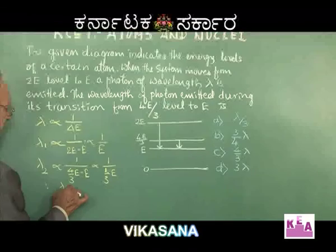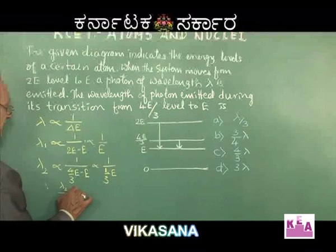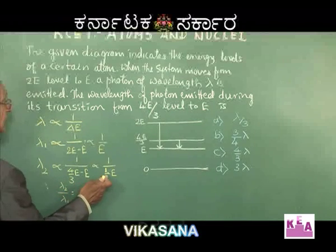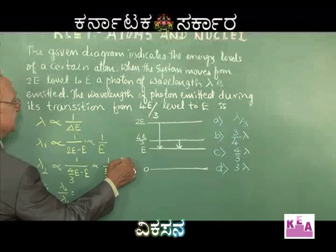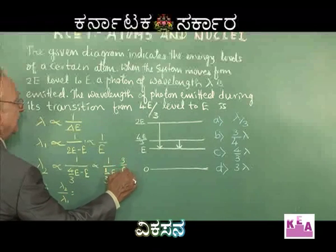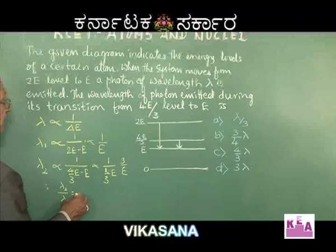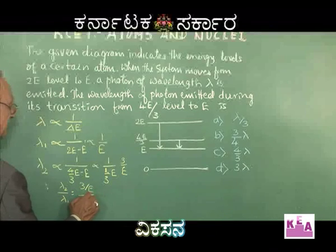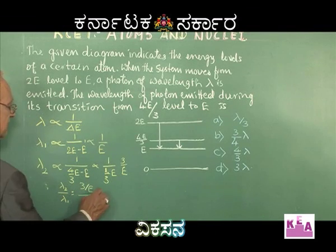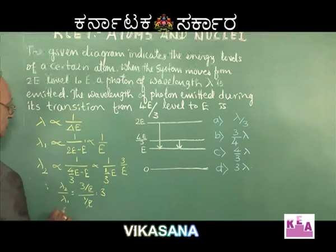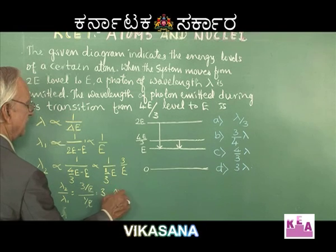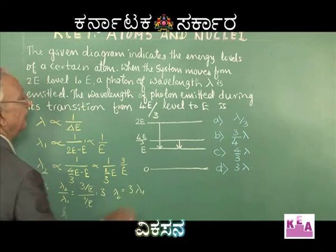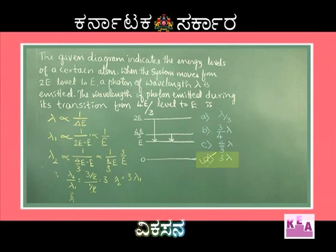Taking the ratio λ₂/λ₁: we get (3/E) divided by (1/E). The E cancels, giving λ₂/λ₁ = 3. Therefore λ₂ = 3λ₁. The correct choice is D, which is 3λ.